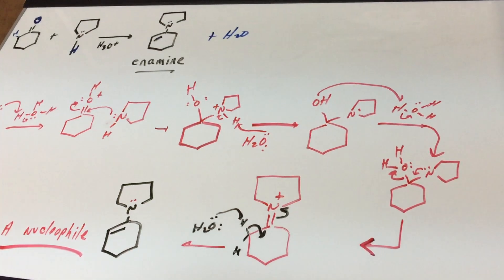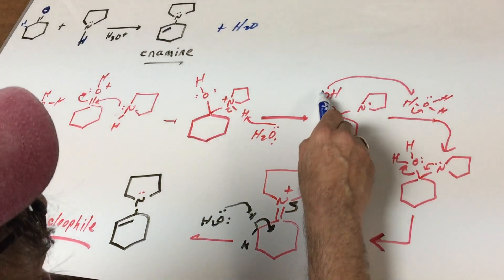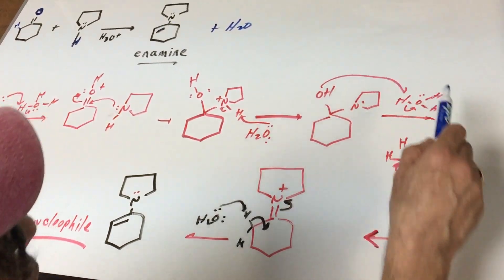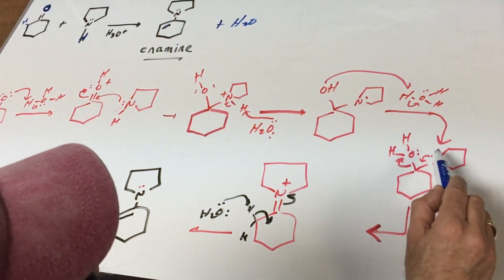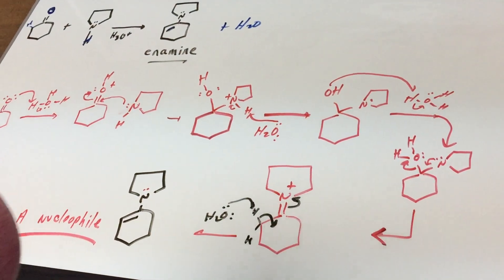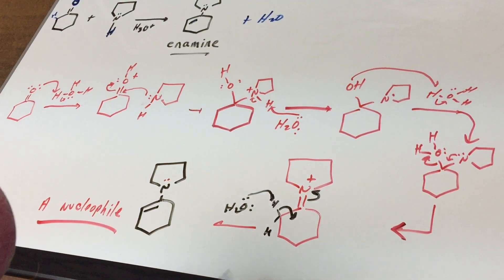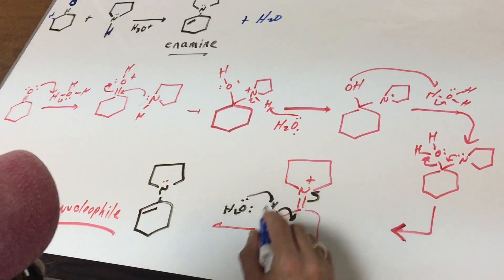The next step, I set up my leaving group. I protonate the O and there's my OH. Now watch, the water leaves, the double bond forms, and now I form this iminium ion.